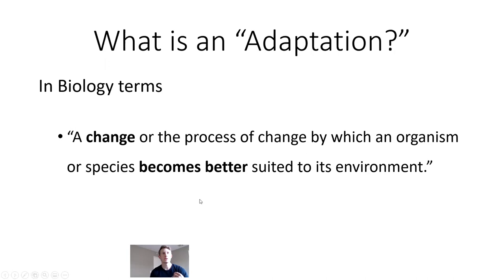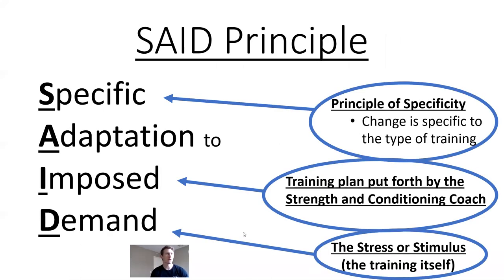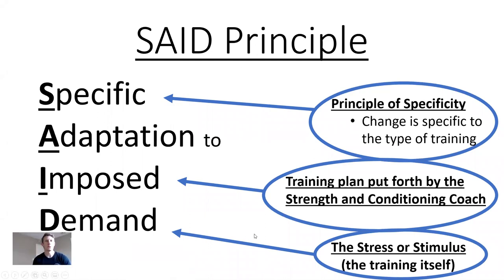First, we'll talk about adaptation — the change or process of change that helps us improve to fit our environment. Training itself is our stimulus or new environment that we put athletes in so they can be better suited for their sport. With the SAID principle — Specific Adaptations to Imposed Demands — the stimulus we give athletes through training session design, micro cycles, meso cycles, and macro cycles will produce a specific adaptation based on the demand imposed.